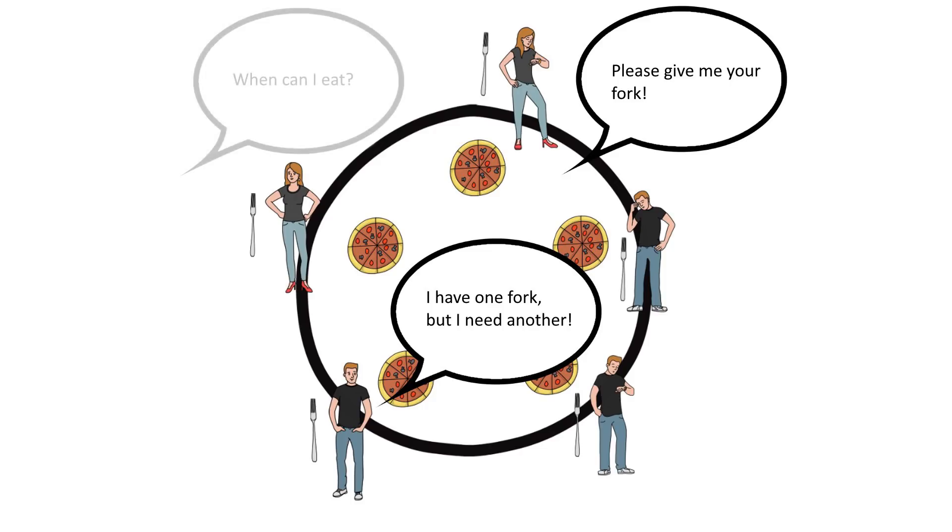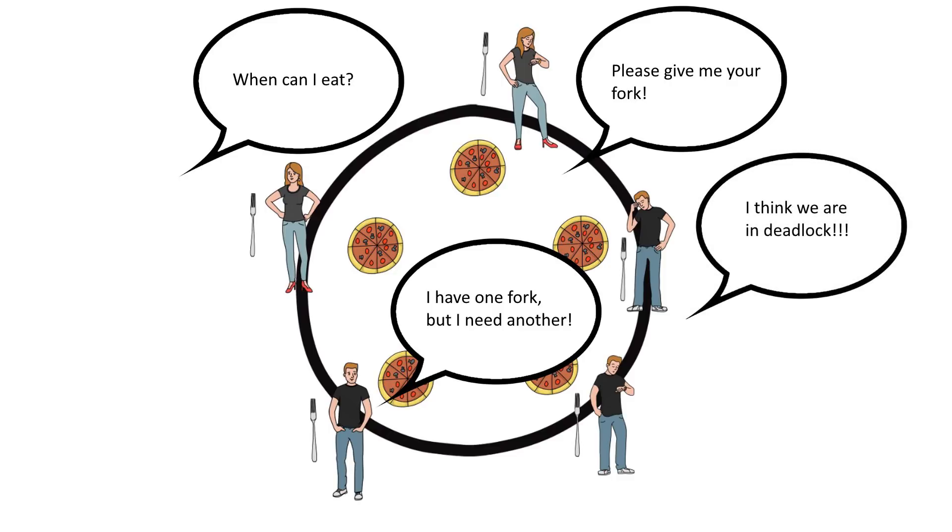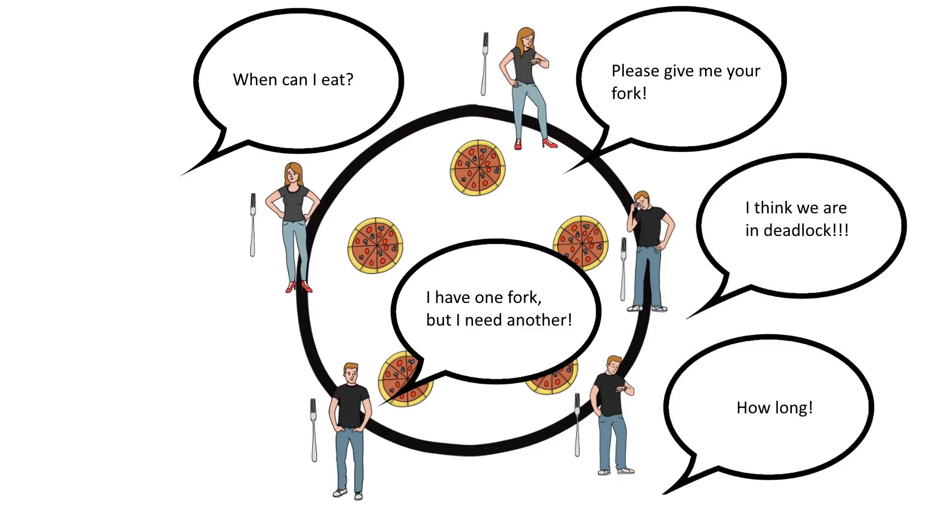So there you have it: the dining philosophers problem illustrates how to avoid deadlock, where two or more programs ask for the same resource but wait on each other to free an existing one. A monitor employs an atomic lock to ensure an agreed order for who can access resources at any one time. Software engineers working with multi-threaded or multi-processed systems must use this kind of locking all the time, and understanding it is a fundamental skill.